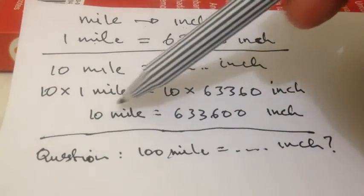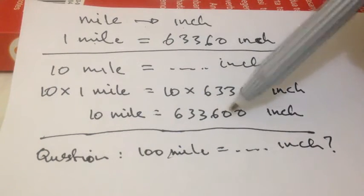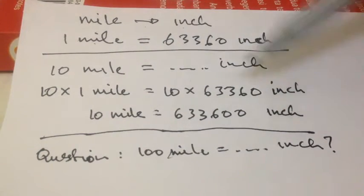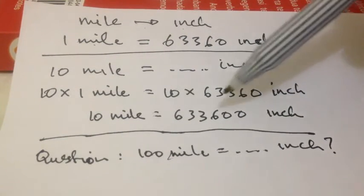Then 10 miles is equal to 633,600 inches. Because we multiply by 10, we'll have another 0 at the end of the number.